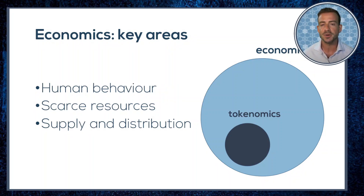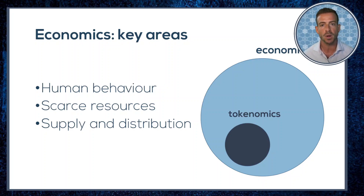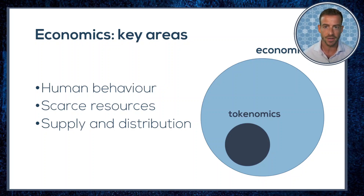There's more going on here than a tedious argument about which subject belongs where. Economics often puts human needs and desires front and center in its explanations, which I think helps us be clearer about what human problems tokenomic designs are trying to solve — and that helps us stay open-minded and imaginative about the different ways we might be able to solve those problems in the future.